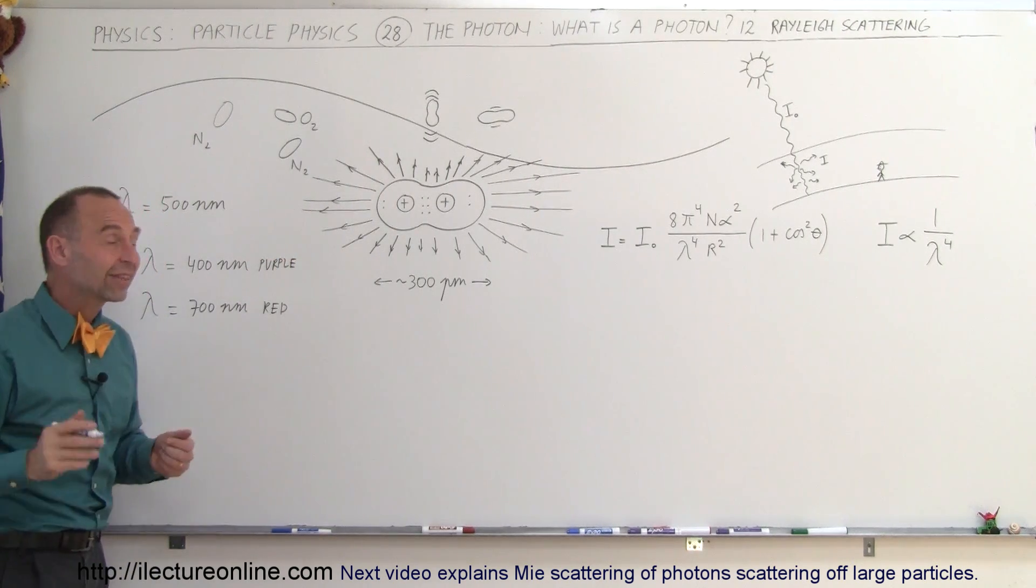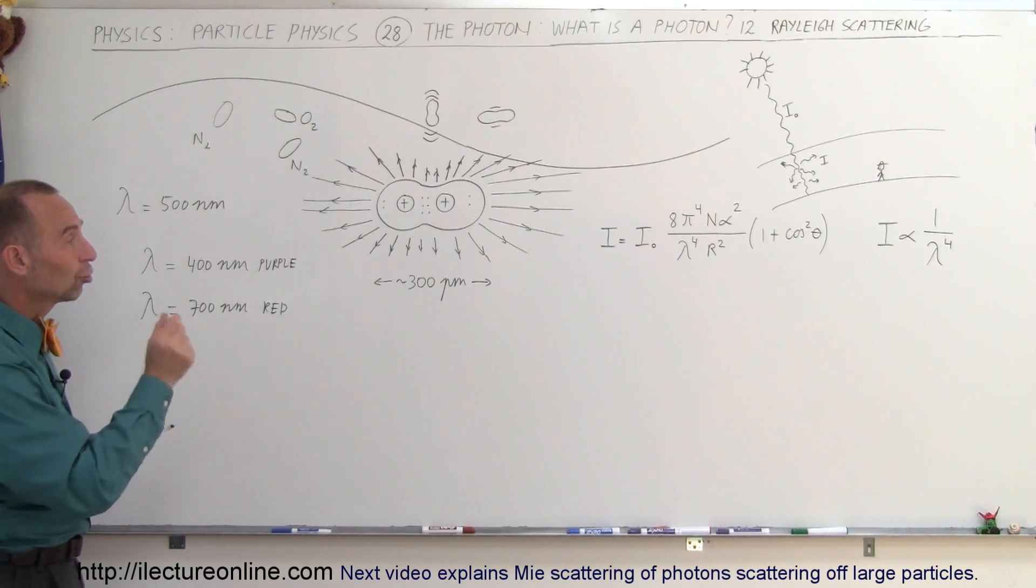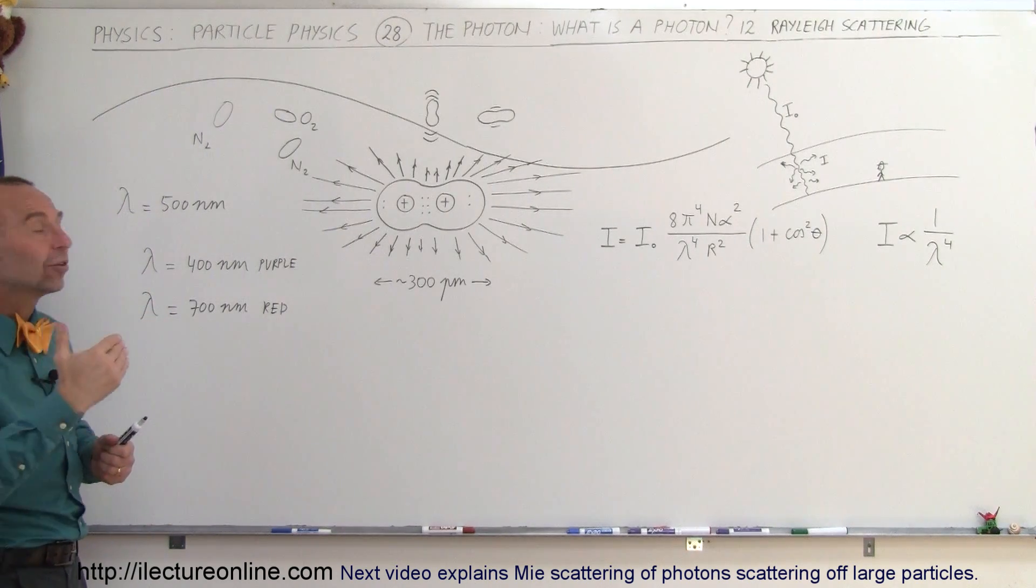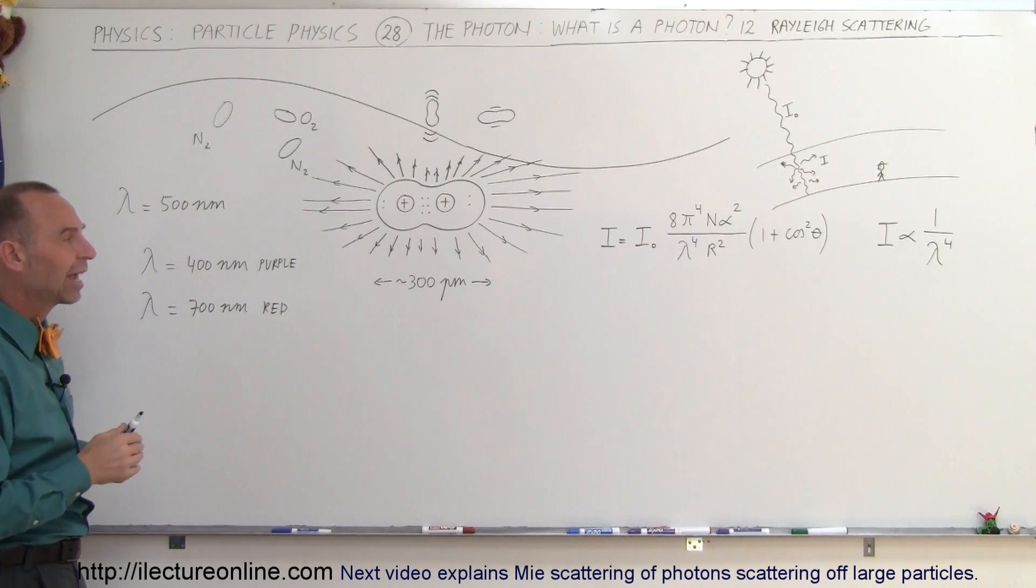So which light gets scattered more? Well, it turns out that the shorter the wavelengths, the greater the scattering. The longer the wavelengths, the less the scattering.